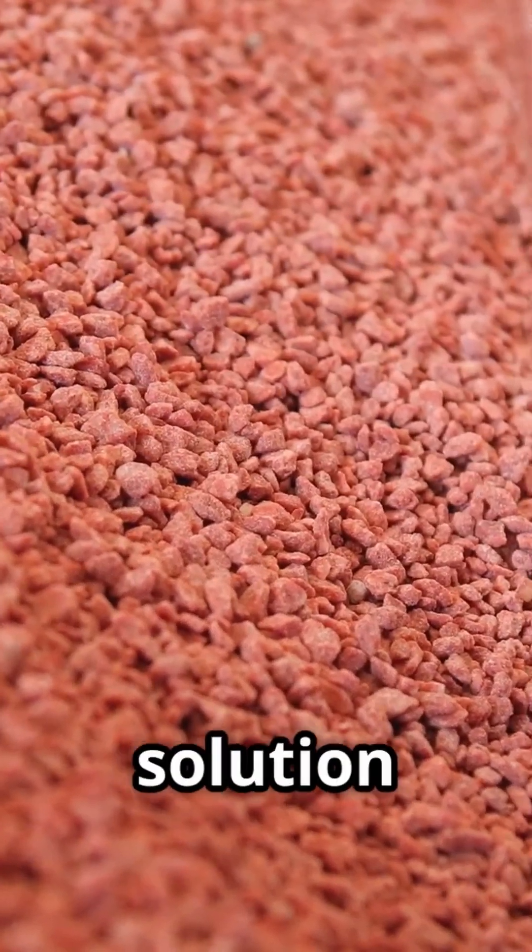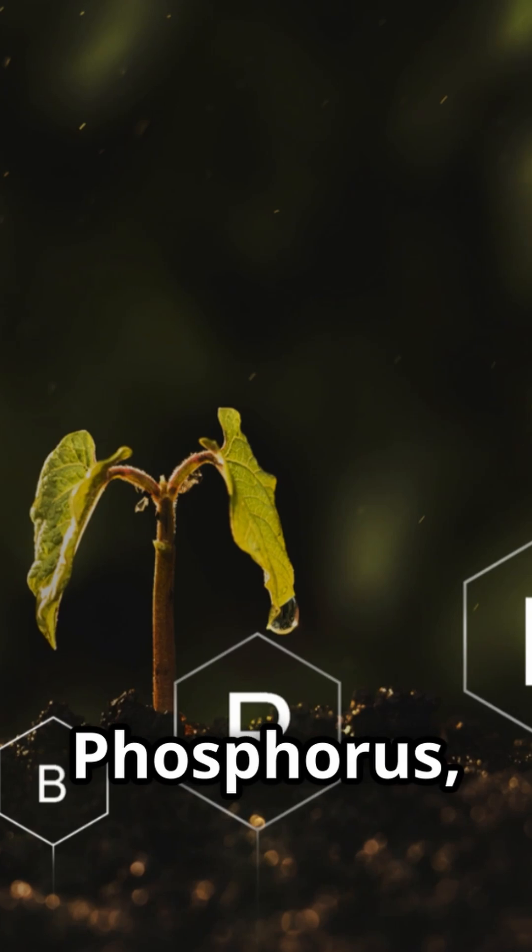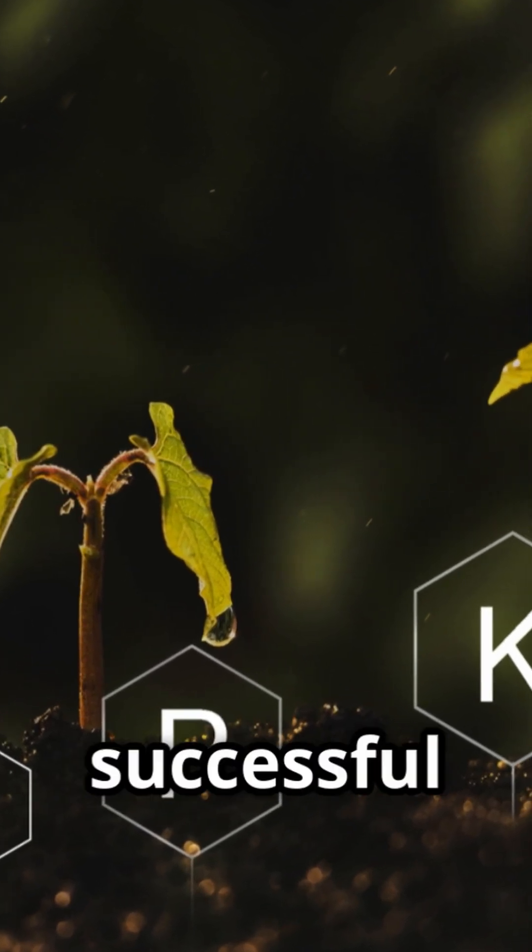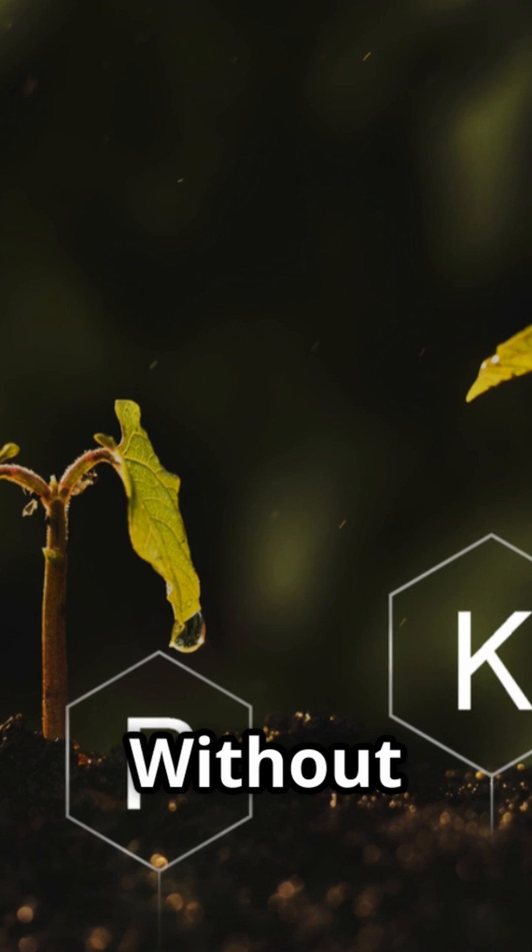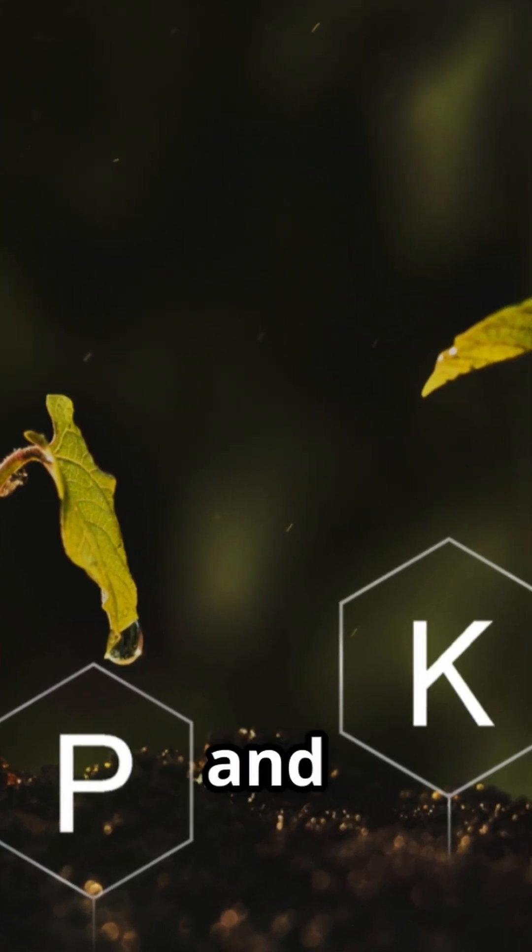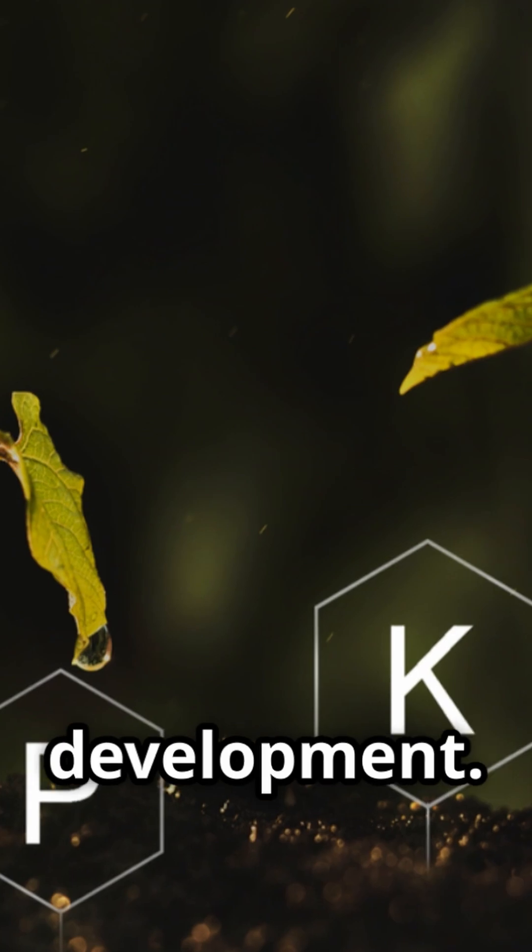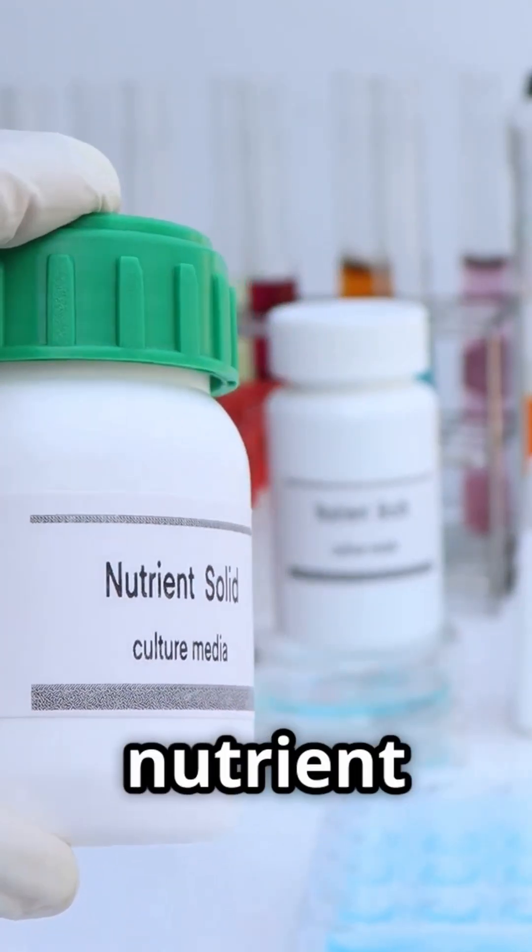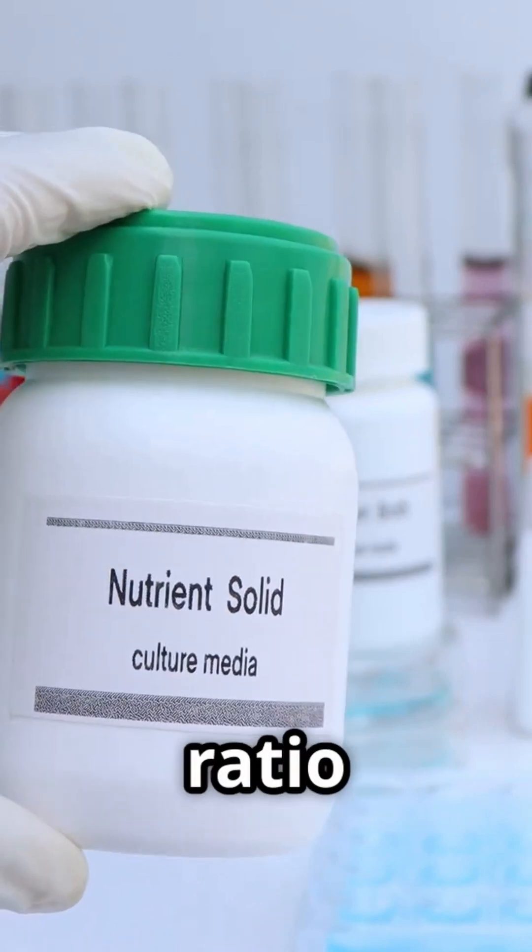Let's meet the stars of our nutrient solution: nitrogen, phosphorus, and potassium. These three elements are the cornerstone of any successful hydroponic garden. Without them, your plants simply wouldn't thrive. Each one plays a unique and vital role in plant health and development. These three macronutrients are represented by the NPK ratio you see on nutrient bottles.